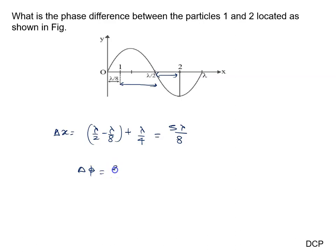Delta phi equals 2π by lambda into delta x, which means 2π by lambda into 5 lambda upon 8. Delta phi value becomes 5π by 4. So the answer to this problem is 5π by 4.